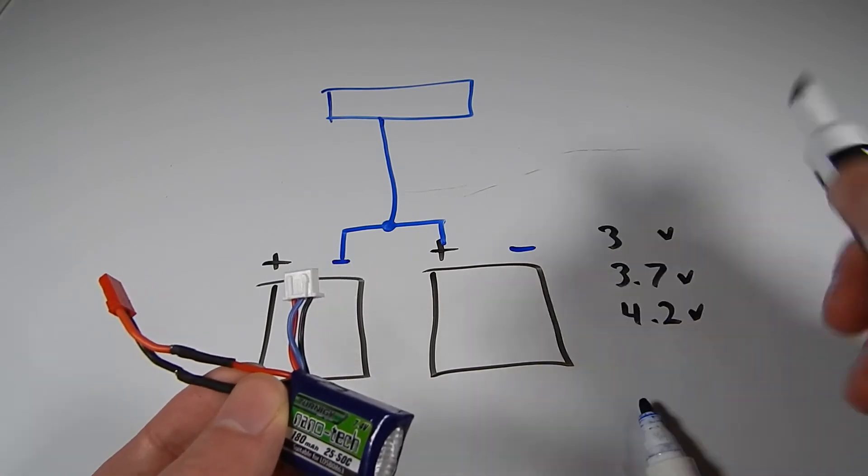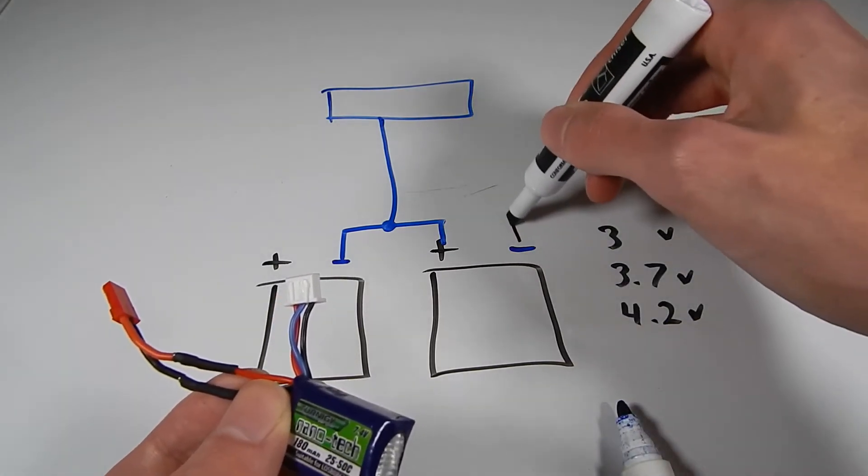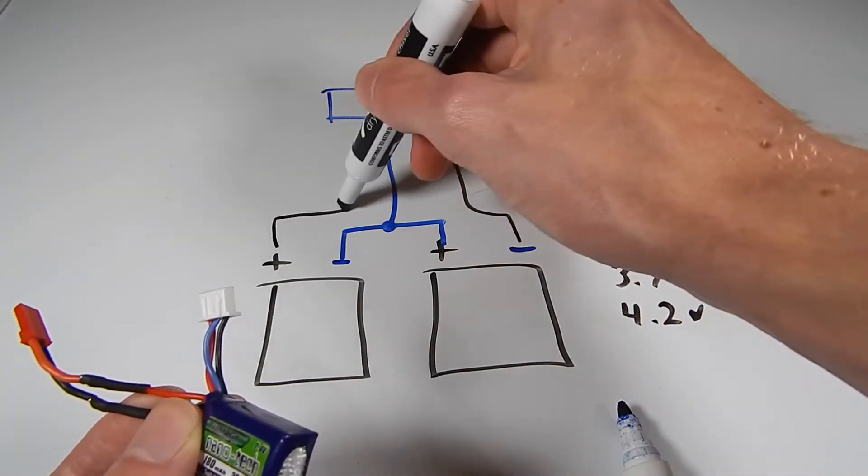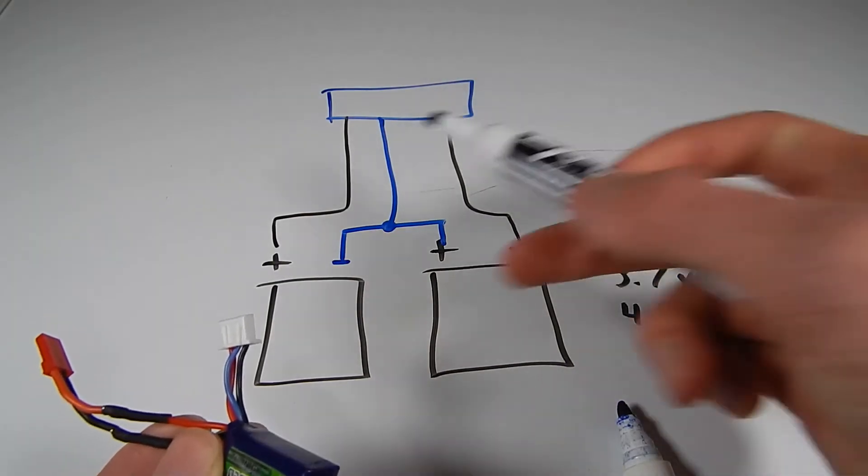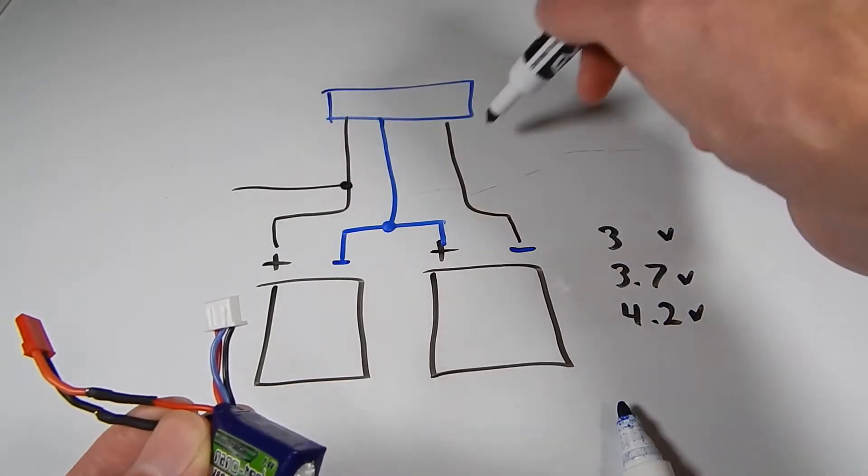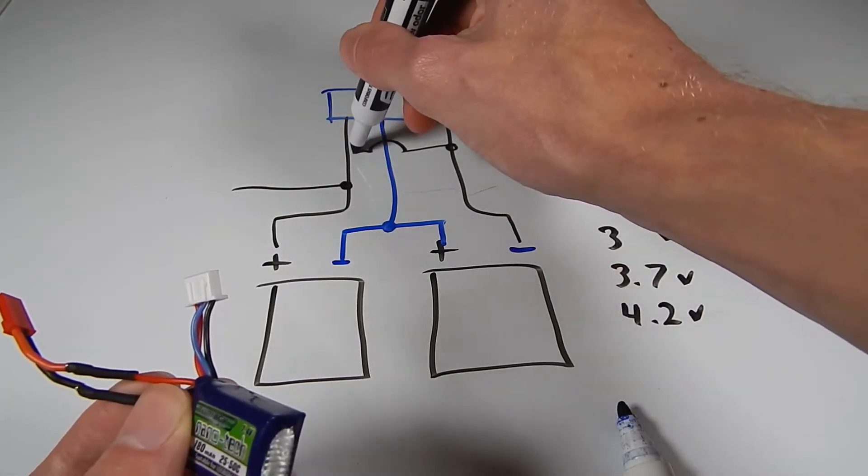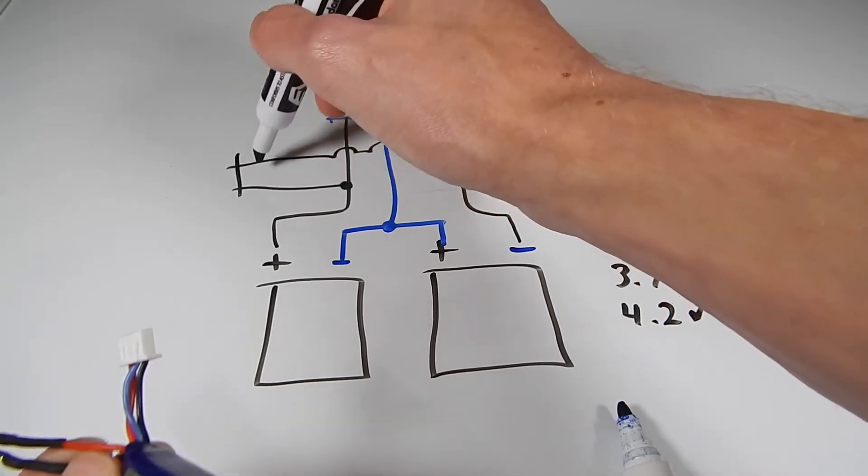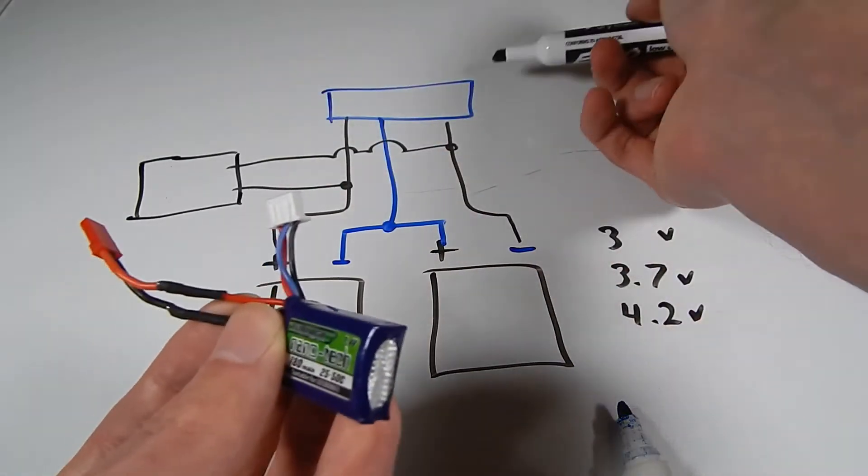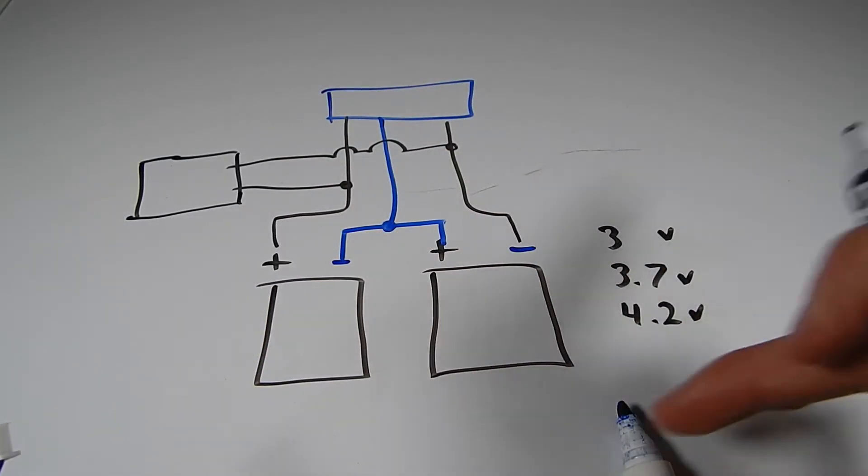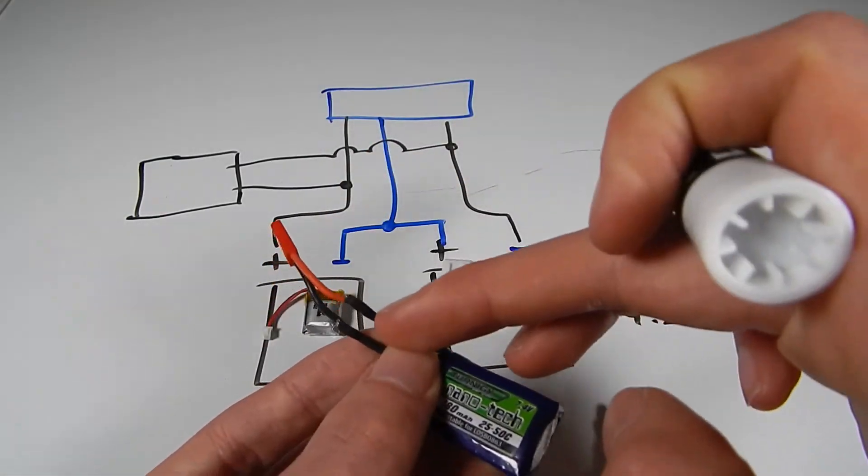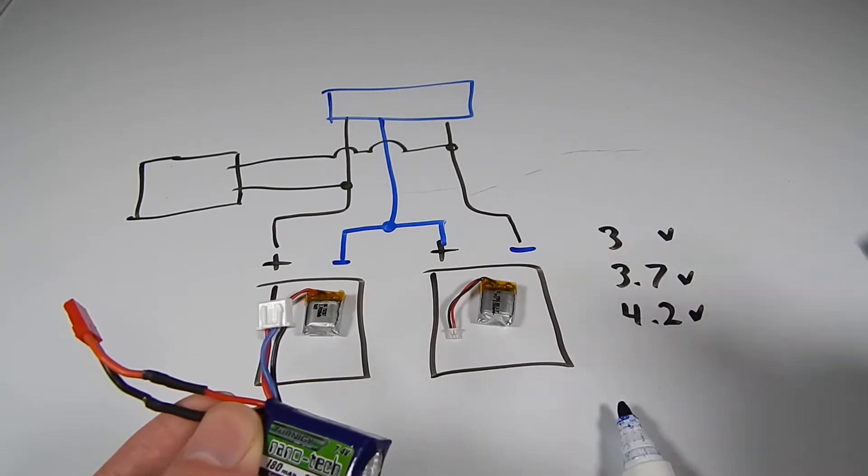We're going to have two plugs coming off of this thing and one of them is going to be this balance lead. The balance lead is going to have a connection point to this middle section of this battery. The minus line is going to go from one battery up to the balance lead and the positive line is also going to go from one battery up to the balance lead. These two things are also going to run out to the actual plug. That's how we're going to wire this whole thing up just by substituting these two batteries and we're cutting these leads off and adding them to the top circuit.